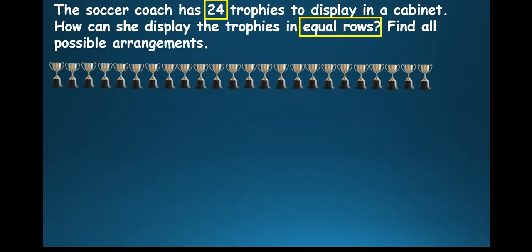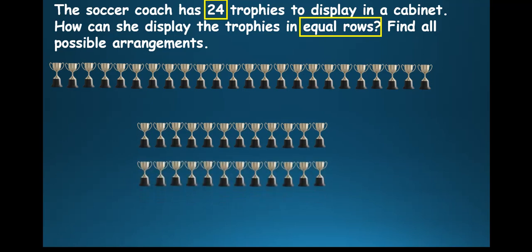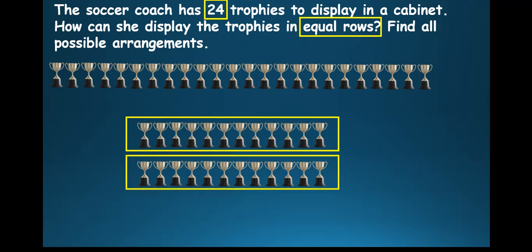Then we look at another way of arranging this in the cabinet. So if we count the first 12 and another 12, of course 12 plus 12 will still give us 24. So in this case, we have one row, another row. So two rows. And in each row is 12 trophies. So we can say this is two rows of 12.